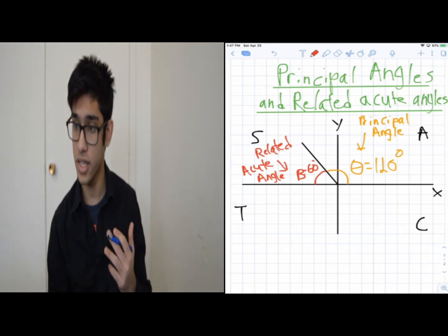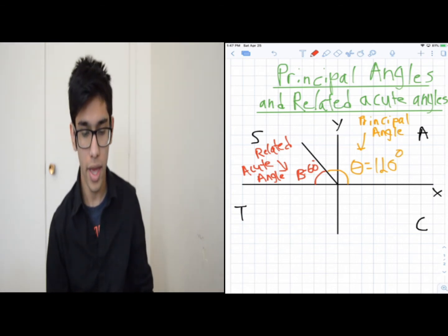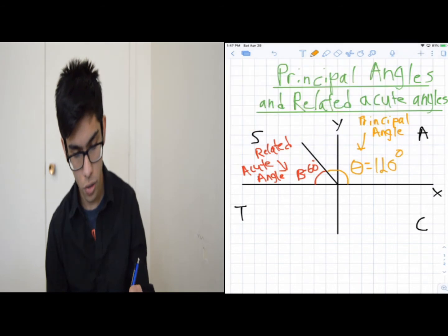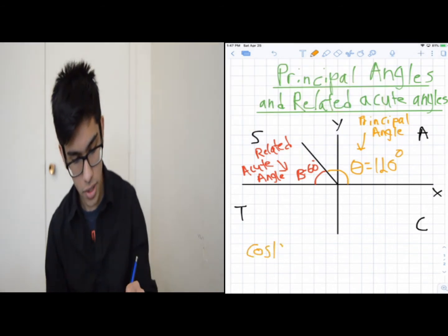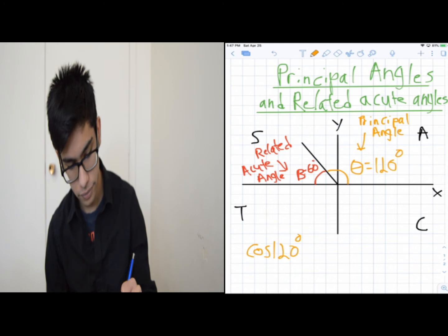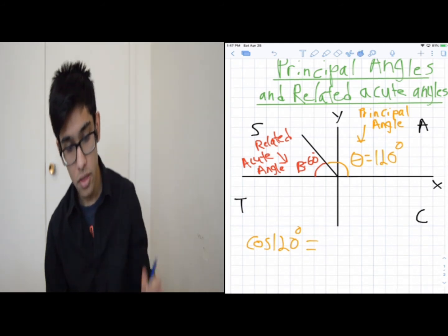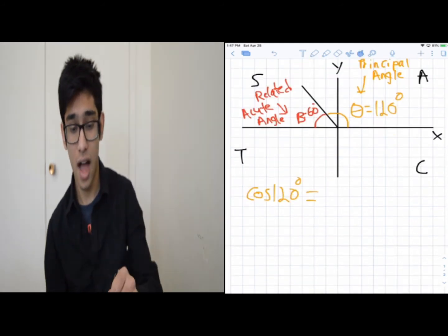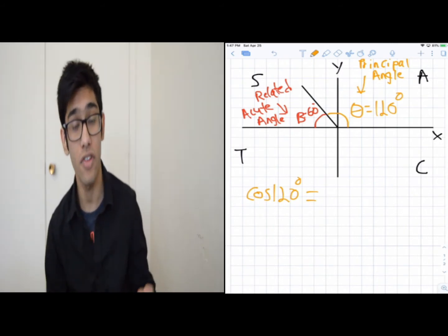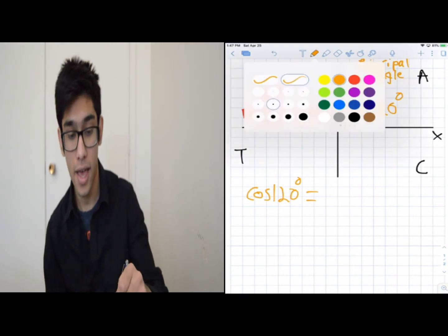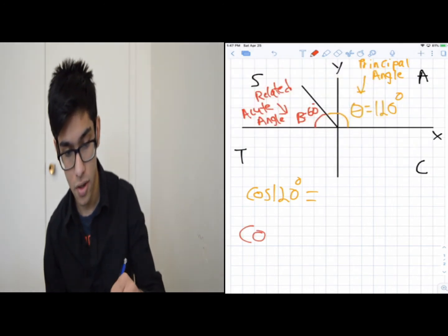So to solve for cosine of 120 degrees, the trick is: I don't solve for cosine of 120 directly. Instead, I solve for cosine of 60 degrees — the related acute angle — and use that technique to find my answer.